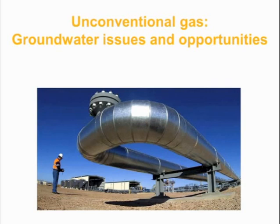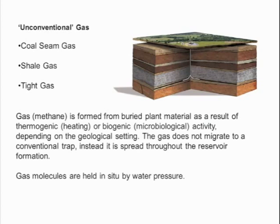I get the advantage of being the third speaker and being able to whiz through some of the introductory material greatly covered by Martin and Colin. We've already heard about the different sorts of unconventional gas and how it's produced through heating and microbial activity. From the point of view of groundwater, one important point is that gas is held in fractures and pore spaces of rock material under water pressure — a key point when removing both water and gas in coal seam gas production.